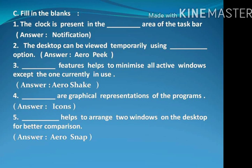Question number C: Fill in the blanks. Question 1: The clock is present in the — area of the taskbar. Answer: notification area of the taskbar. Question 2: The desktop can be viewed temporarily using the — option. Answer: Aero Peek. Question 3: — feature helps to minimize all active windows except the one currently in use. Answer: Aero Peek. Question 4: — are graphical representations of the programs. Answer: Icons. Question 5: — helps to arrange two windows on the desktop for better comparison. Answer: Aero Snap.